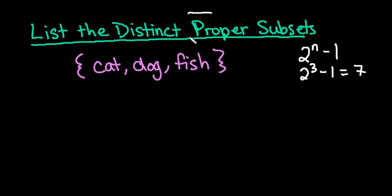Remember that the proper subsets exclude the original set. So the difference between distinct subsets and distinct proper subsets is the proper subsets do not include the original set, where just a regular distinct subset would include the original set. So when we're starting with this, we would not put cat, dog, fish, because we're looking for the proper ones.